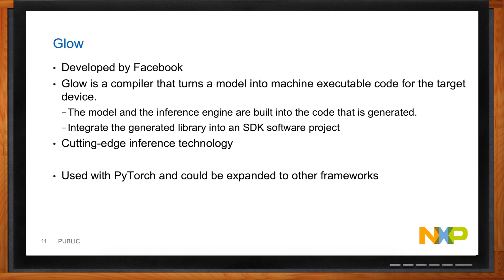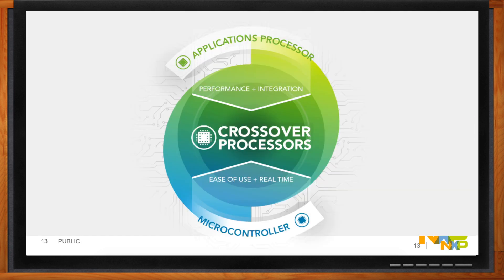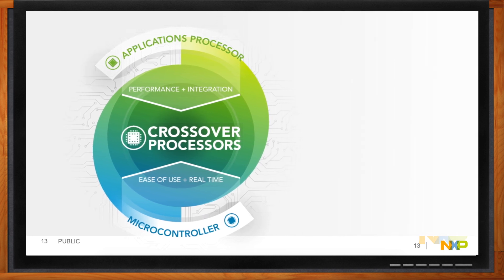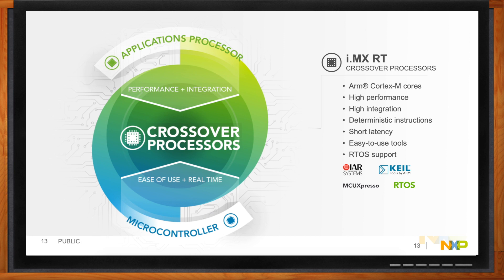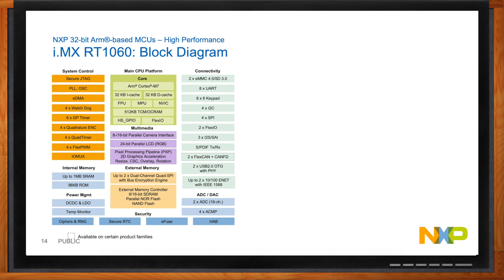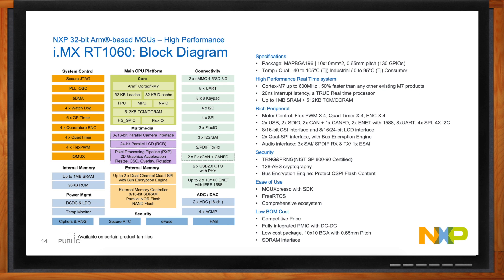All these inference engines run on the i.MX RT family — NXP's crossover processors with ARM Cortex-M cores running at several hundred megahertz, rich embedded peripheral integration, deterministic instructions, and short latency, making it a perfect crossover between an applications processor and a microcontroller. The RT1050 and RT1060 run the EIQ stack: a Cortex-M7 at up to 600 MHz — 50% faster than other M7 products — with up to 1 MB of SRAM and rich peripherals including FlexPWM, quad timers, USB, CAN, Ethernet, SPI, and SDIO.